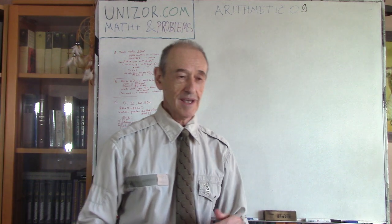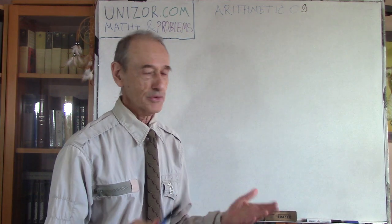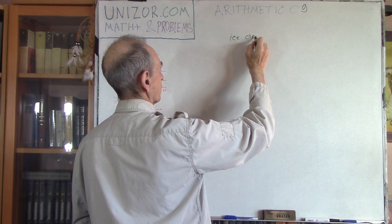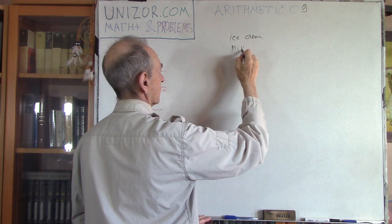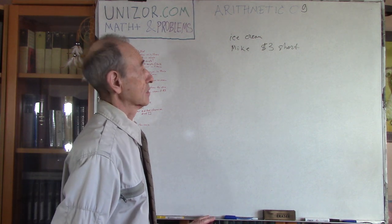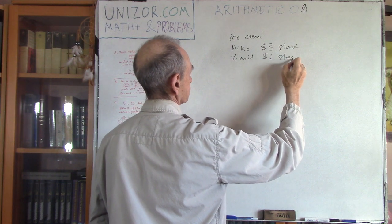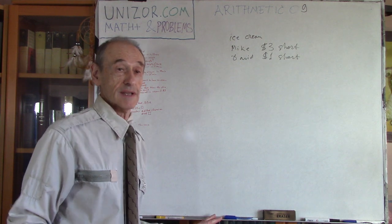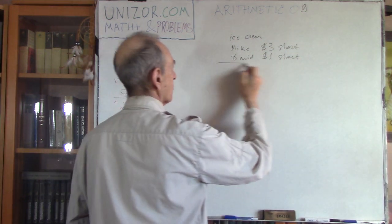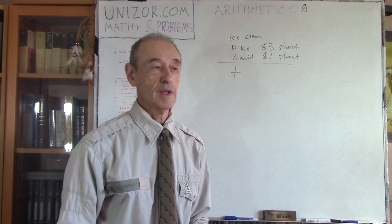Number two is really a joke. But again, it's a joke which using the common sense allows you to solve very simply. Two friends, Mike and David, decided that they want to have ice cream for lunch. Mike is three dollars short of the price of the ice cream scoop. David is also short by one dollar. Then they decided, let's combine our capitals and buy ice cream and we will share it. Even one scoop we can share. So, they combine them together and they are still short.